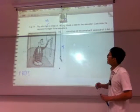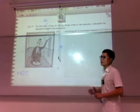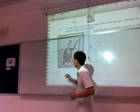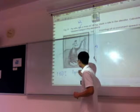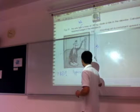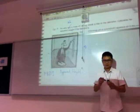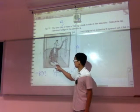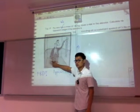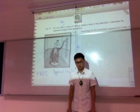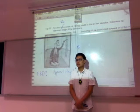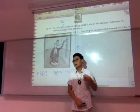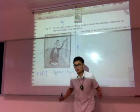Do you understand the meaning of apparent weight? To visualize this, imagine you standing on a weighing scale on the floor. If you were to stand still, the weighing scale's reading would be the same as your weight — your mass times g. Agree?